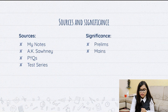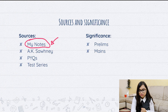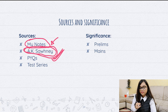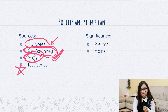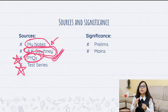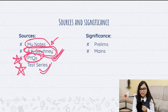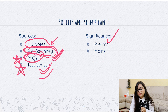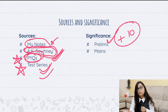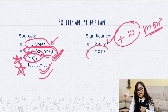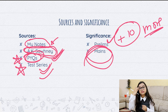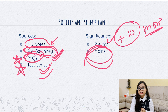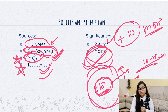Coming to sources and significance for Measurements: I used my notes and the AK Saini textbook — which I have had since second year of college — and I focused a lot on previous year questions, because without looking at previous year questions you will never understand what to study and what to leave. Test series also helped me a lot. Significance is mostly in prelims, where you can easily get plus 10 marks over other students, and in mains it gives you more flexibility in choosing questions during question selection.